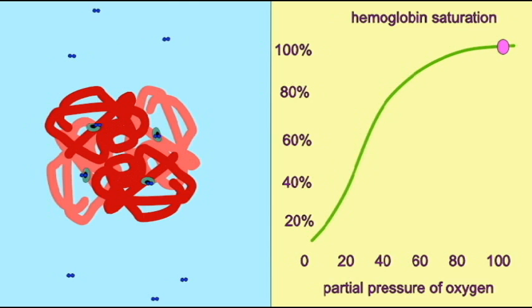Note that hemoglobin can bind oxygen at higher partial pressures of oxygen and then can release oxygen when the partial pressure decreases.